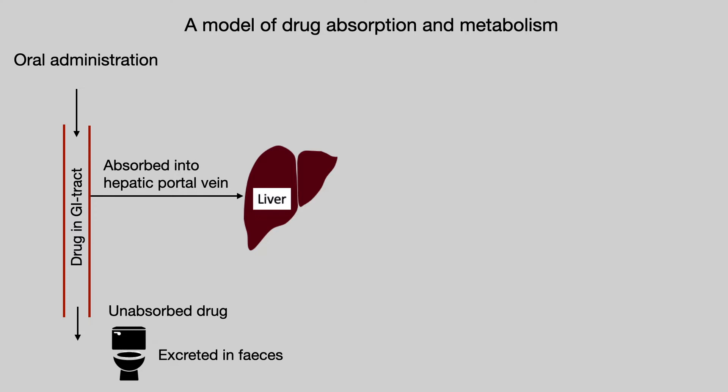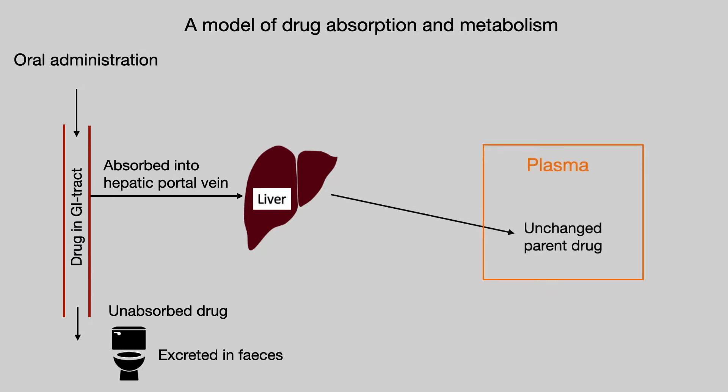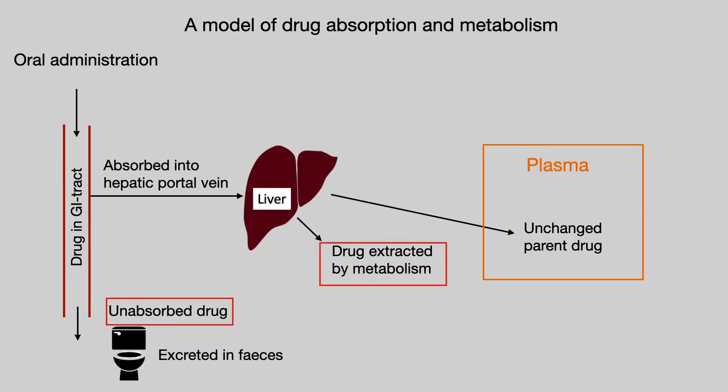In our simplified model, the drug has two routes out of the liver: either as unchanged parent drug entering plasma where it will circulate around the body, or the liver will metabolize the drug and the drug is then extracted from circulation by metabolism. So there are two processes which can limit the amount of the orally administered drug that ends up in plasma.